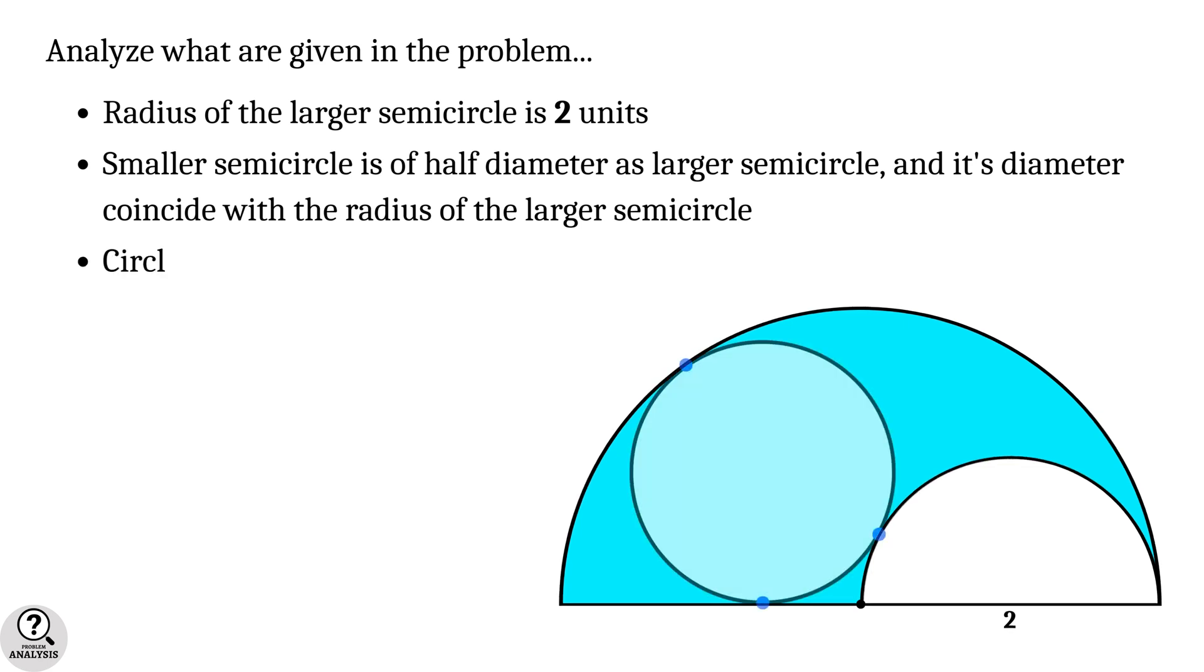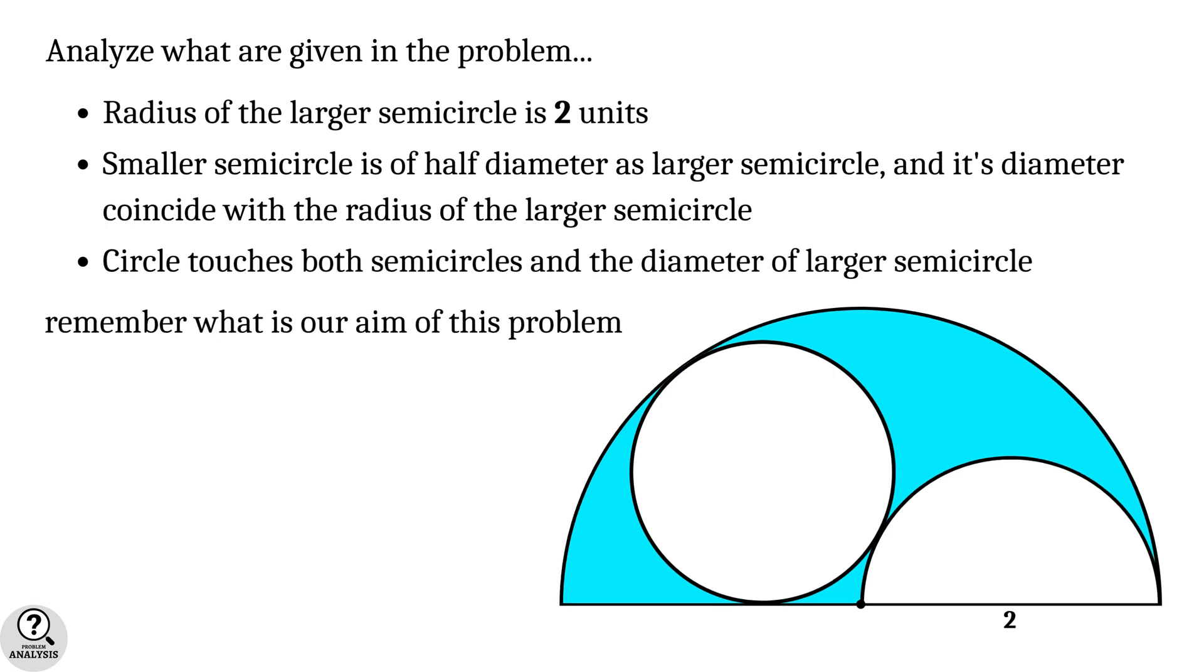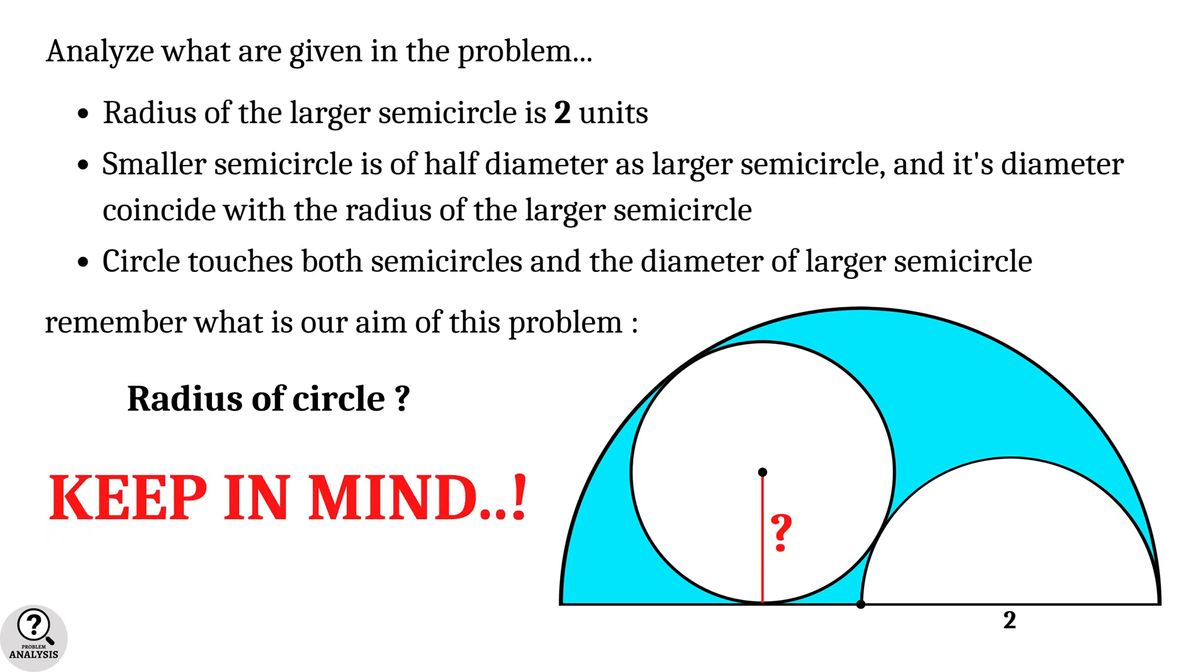And finally, the circle touches both semicircles and the diameter of the larger semicircle. Now remember what is our aim of this problem? It is nothing but to find the radius of the circle. This is the structure of our problem, so always keep in mind.